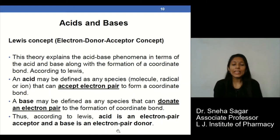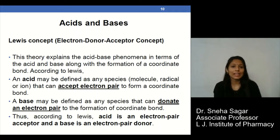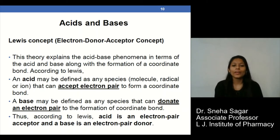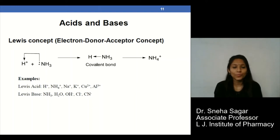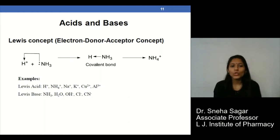The next concept is the Lewis concept, or the electron donor-acceptor concept. According to Lewis, an acid is defined as any species which accepts an electron pair, whereas a base is defined as any species that can donate an electron pair. For example, H⁺ ions and NH₃ — nitrogen in ammonia has a lone pair of electrons which can be donated to H⁺ ions. So ammonia is termed a Lewis base and H⁺ is termed a Lewis acid.